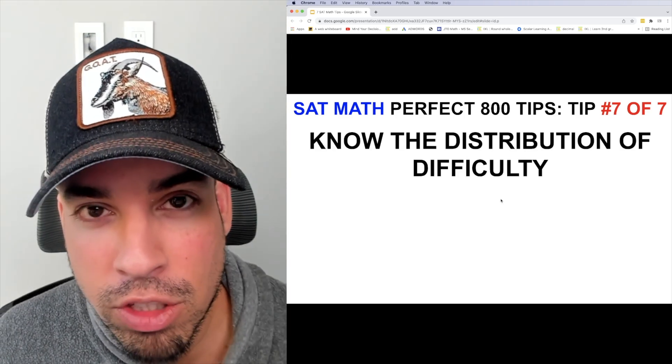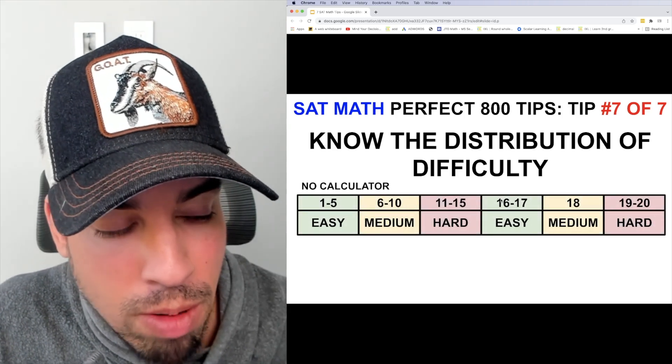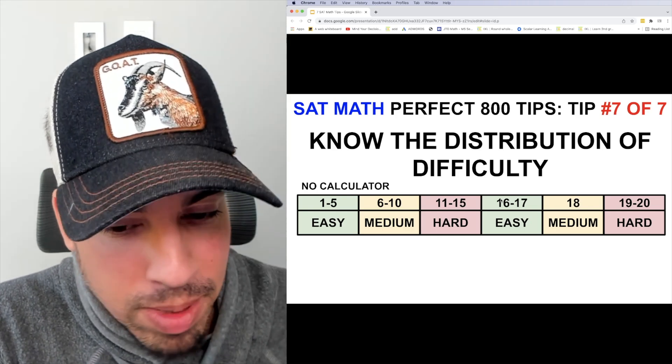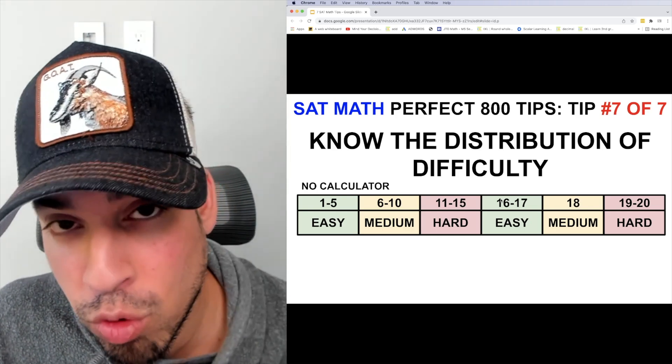So when it comes to the no calculator section, of course, you've only got 20 problems and this is how it breaks down. The two pockets of difficult questions are from 11 to 15 and 19 through 20.